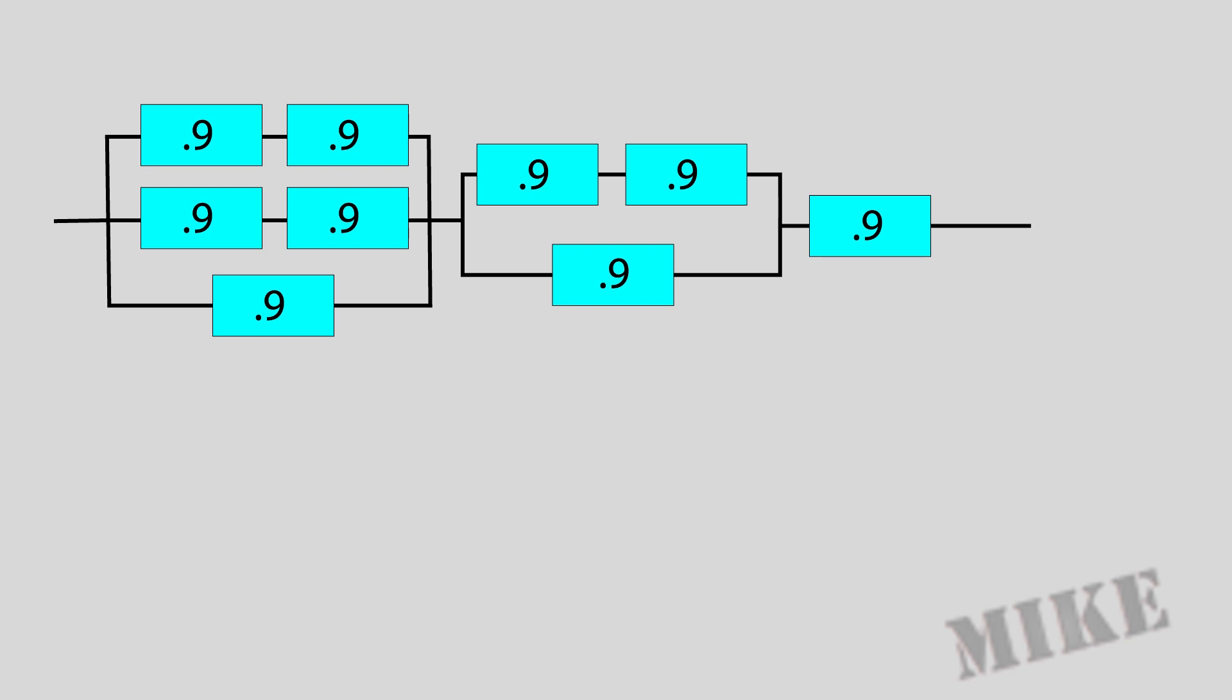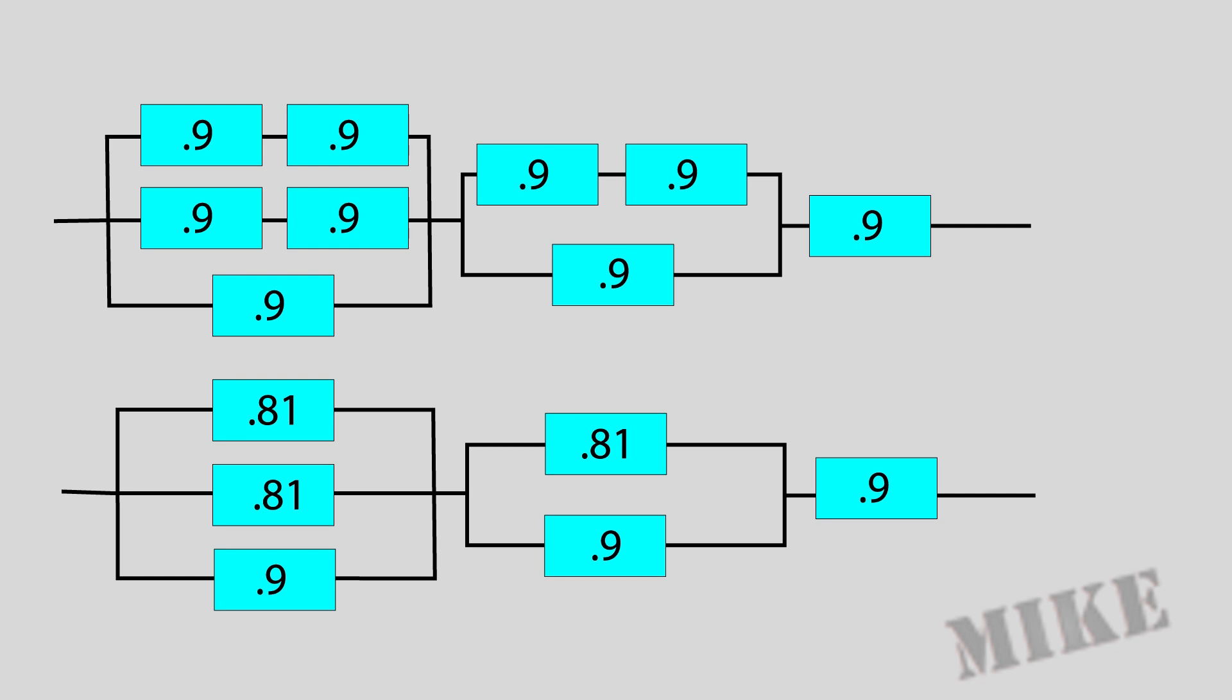We have to simplify this system by taking each series part and combining it. So, here you see I've multiplied the 0.9s together in each series branch and got the 0.81s. Yes, it's less reliable in each branch because it's in series. Remember the chain analogy?